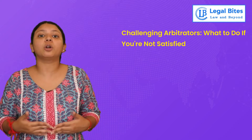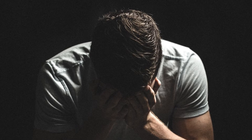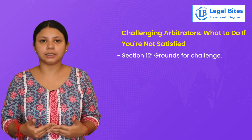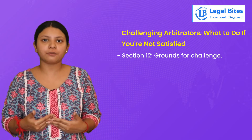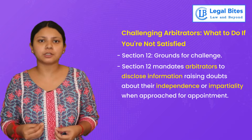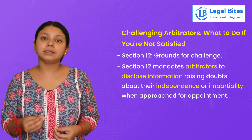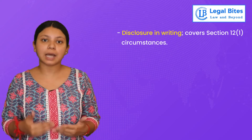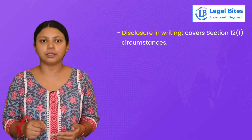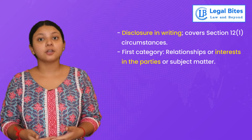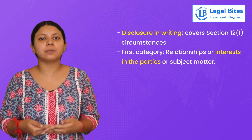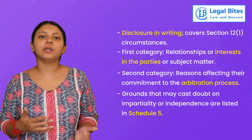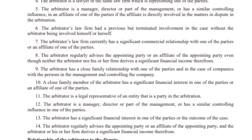Now, after the appointment, let's talk about what will happen if you are not happy with the appointed arbitrators. In the Act, there is also a procedure to challenge arbitrators — we will now talk about Section 12, which covers grounds of challenge. To make sure arbitrators are above board and persons of integrity, Section 12 makes it obligatory that when a person is approached to be appointed as an arbitrator, they must disclose relevant information. The grounds include: first, existence of a relationship or interest in the parties or subject matter likely to give rise to justifiable doubts as to impartiality or independence; and second, reasons which might affect the arbitrator's ability to devote sufficient time. Grounds on which impartiality and independence are doubtful are given in Schedule 5, which you can see on your screen.